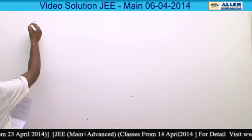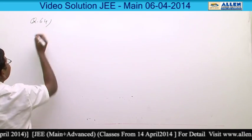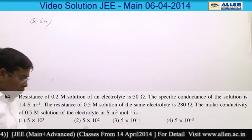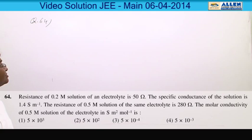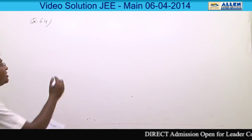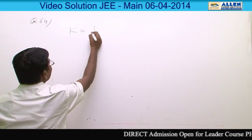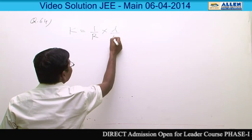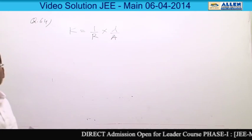Question number 64 from electrochemistry, conductance part. In the question, specific conductance K is given and that is equal to 1 by R into L by A, where L by A is the cell constant.